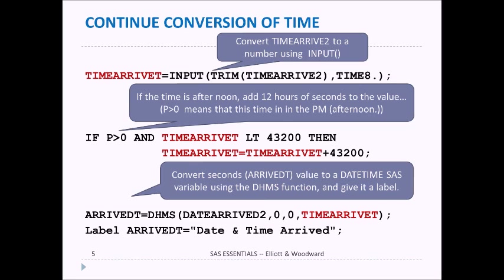Then we convert to a SAS datetime value using the DHMS function. The first argument is date_arrive2, the next two arguments are 0 and 0 for hours and minutes, and the final argument is time_arrive_t, which holds the number of seconds. Putting all that together gives us a value that is a datetime value — it has both the date and the time in one variable — and then we assign it a label.